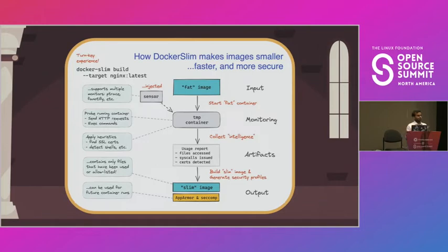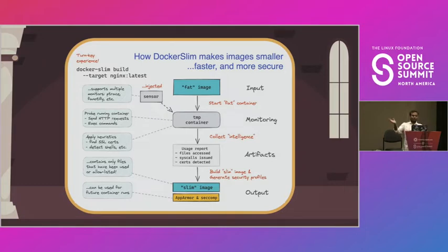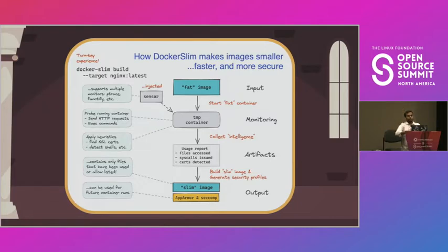Now let's talk about how it works before we move to the live demo — though I'll mention the demo gods weren't with me this morning, so I have a pre-recorded demo ready. Let's talk about how Docker Slim makes images smaller, faster, and more secure. In the Docker Slim codebase there are two main things: the main Docker Slim binary, and the sensor. It's the sensor which injects monitoring and multiple tracing tools into a temporary container created from the fat image.